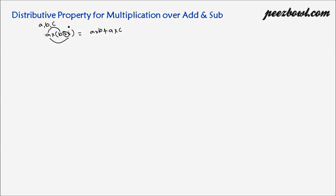So this is distributive property for multiplication over addition. Let us learn this by an example. Suppose we have three integers 3, 2 and 4. We need to put these values on our left hand side, that is a multiplied by b plus c. So the value of a is 3, multiplied by b which is 2, plus c that is 4.